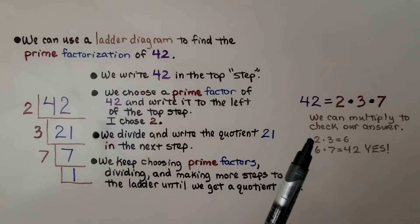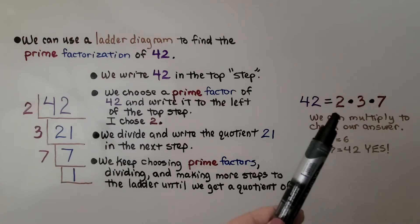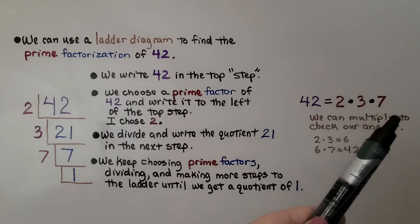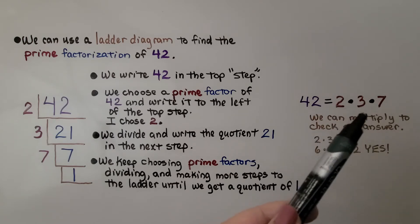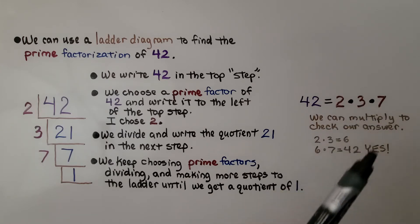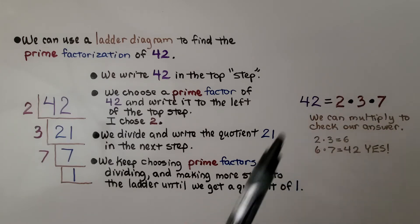For the prime factorization of 42, we've got 2 times 3 times 7. We can multiply to check our answer. We can do 2 times 3, which is 6, and then 6 times 7 is 42. So we know we did it correctly.